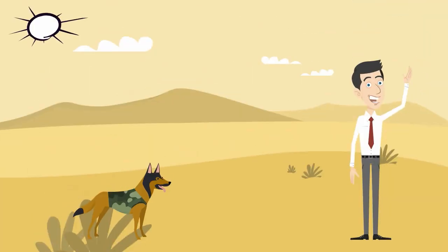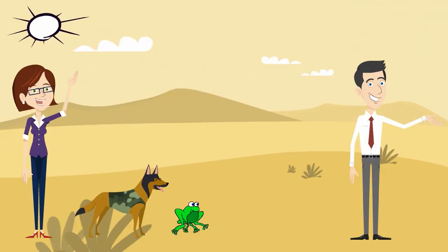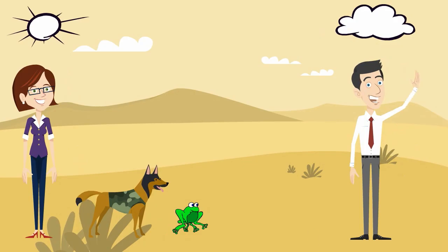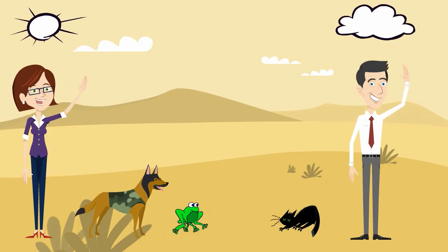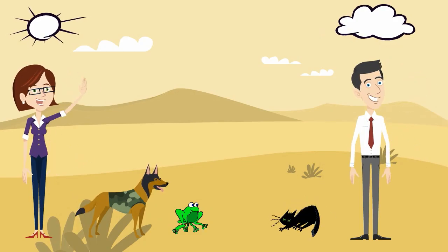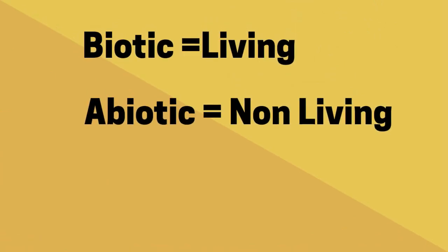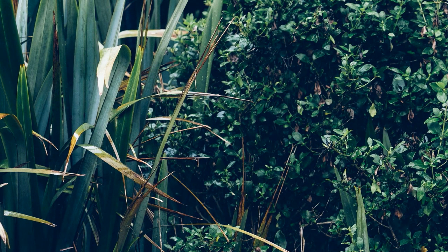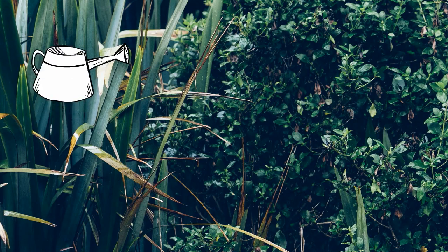An ecosystem is a community of living and nonliving objects in a particular area. Another name for living objects is biotic, and nonliving objects is abiotics. You can classify ecosystems several ways, but one method is to use the amount of rainfall and the type of soil.